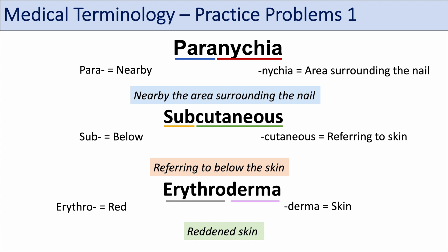To recap the practice words: peronychia — para meaning nearby, nikia meaning area surrounding the nail, so nearby the area surrounding the nail. Subcutaneous — sub meaning below, cutaneous meaning referring to the skin, so referring to below the skin. Erythroderma — erythro meaning red, like erythrocyte meaning red blood cell, and the suffix derma meaning skin. So erythroderma means reddened skin.